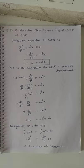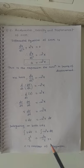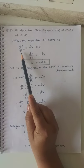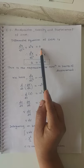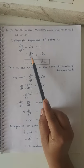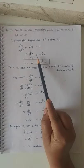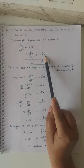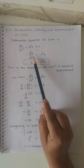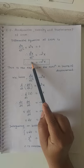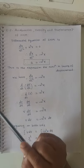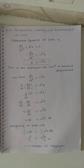To derive these expressions we require the differential equation of SHM. Recall the differential equation of SHM: d²x/dt² + ω²x = 0, therefore d²x/dt² = −ω²x. Since d²x/dt² is nothing but acceleration — the rate of change of velocity — we get a = −ω²x. This is the expression for acceleration in terms of displacement.